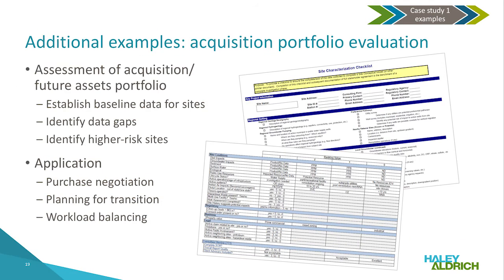The lean approach from case study one can be applied to any challenge that requires prioritization. In this first additional example, a lean-based approach was used to assess and manage an acquisition of environmental sites. Based on customer value, critical data parameters were identified to characterize sites and establish a baseline understanding of each. Risk was also defined for this acquisition and each site assessed. Through this approach, data gaps were identified for follow-up, and sites with higher risk were identified early on so that appropriate resources could be assigned. Additionally, negotiations could be made on the purchase agreement and work could be better planned.